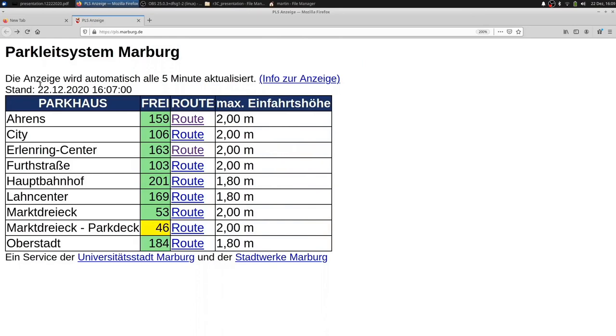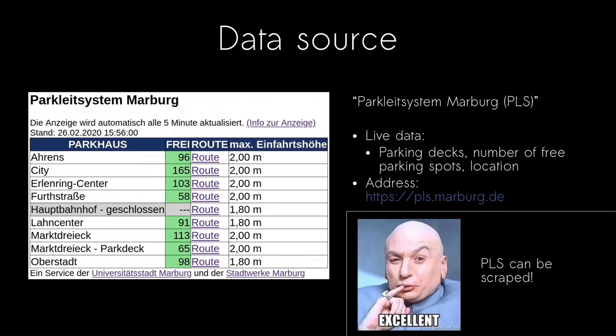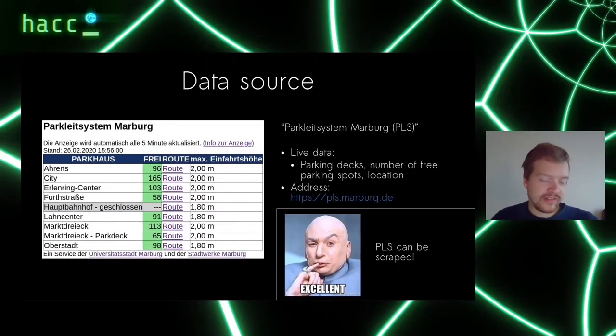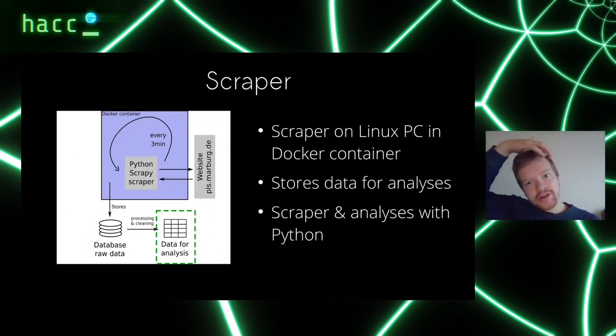There's also the maximum vehicle allowance and the timestamp of the data. This is a very simple website so it's easy to scrape. Regarding the scraper, I used a Linux computer and a Docker container. It simply visits the website every three minutes and writes the data into CSV files which are subsequently used for data analysis. All of it, the scraper and analysis scripts, are written in Python.